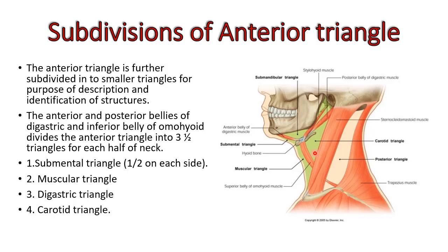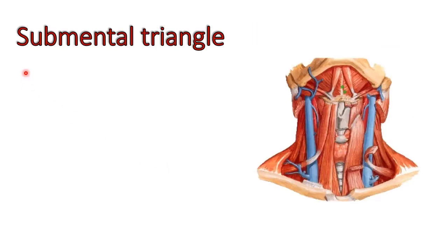The submental triangle forms only a complete triangle when you join the two halves from both sides of the neck. Each half of the neck has only half of the submental triangle. It is named 'submental' because it is below the symphysis menti.